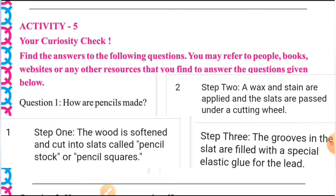Next step: A wax and the stain are applied and the slats are passed under a cutting wheel. वो wax क्या है — graphite और clay जो आता है, जो black color की pencil होती है, उसमें graphite में clay भी मिला रहता है। वो दोनों mix होके एक wax बनती है। उसको pencil के square slats में apply किया जाता है और एक wheel में press करके cut किया जाता है, ताकि उसके inches सही मात्रा में cut हो सकें।